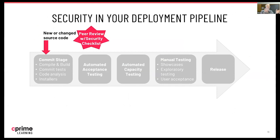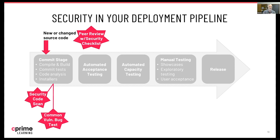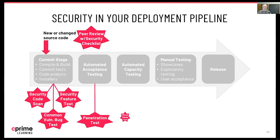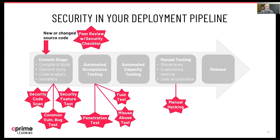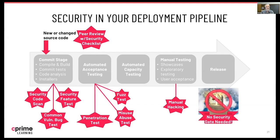So how does this all fit in the pipeline? Peer reviews would be part of our actual commit process before the code gets into the pipeline. At the commit stage, you've got your code scanning and basic testing — vulnerability bugs and making sure security features are working. Then in the automated acceptance testing stage, penetration testing, misuse testing, and fuzz testing should all be built into the automated tests kicked off every time something goes through the deployment pipeline. You can even have manual hacking tests as part of manual testing. The key is, when you get to the end of your deployment pipeline, you don't need a security gate — because our security team has been working with us through the whole process.